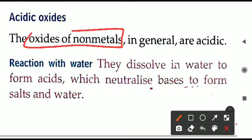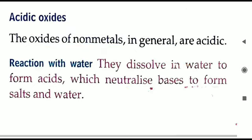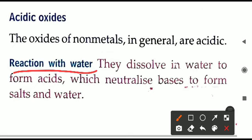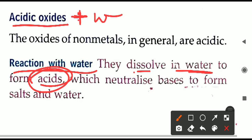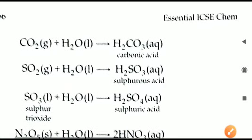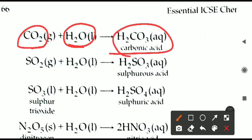The second type is acidic oxide. All oxides of non-metals are acidic in nature — non-metals like carbon, sulfur, and nitrogen form CO2, SO2 or SO3, and NO2 respectively. Whenever these acidic oxides are dissolved in water, they produce an acid. For example, CO2 dissolved in H2O produces H2CO3, carbonic acid — this is what is present in soft drinks.